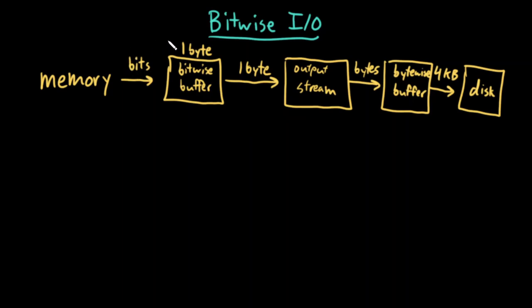Now all we've done is added this small segment here. We write bit by bit to a bitwise buffer, which is a single byte. And then, once that bitwise buffer is full, we write it to our output stream, just as if we were doing regular bytewise I/O. So that was for output — that was for writing to disk.